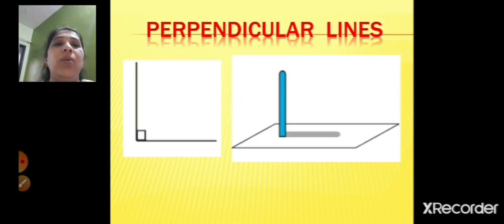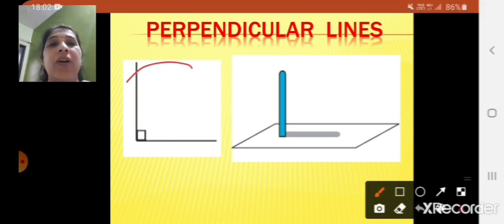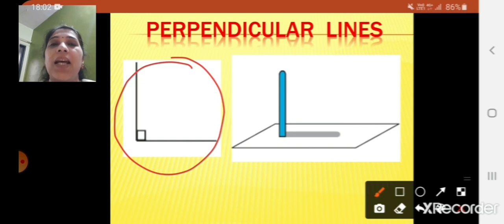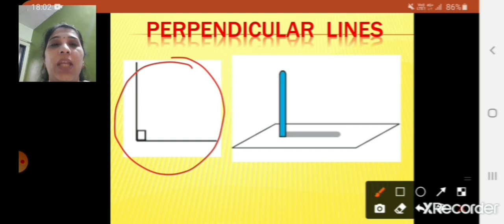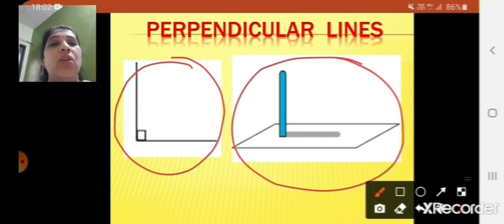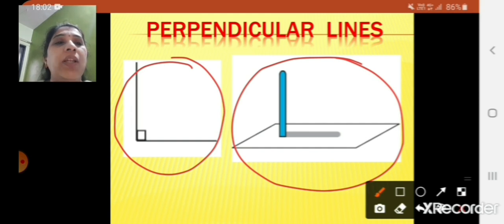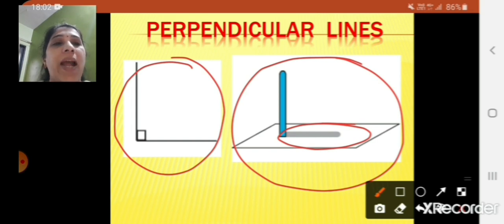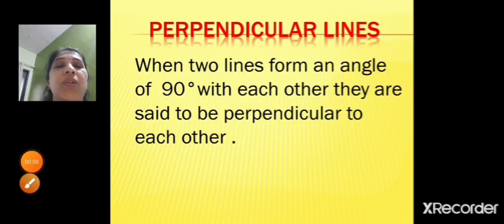Now let's have a look at perpendicular lines. The first figure shows a right angle, which is 90 degree — that means the lines are perpendicular to each other. The second figure shows a pole standing upright and its shadow falling on the ground. The shadow line and the pole form a perpendicular relationship.